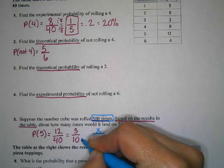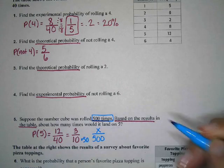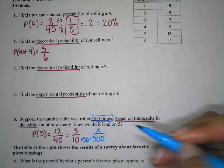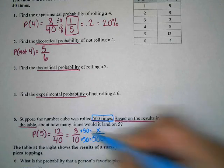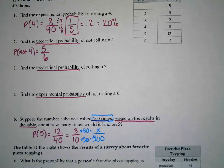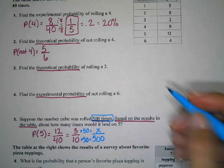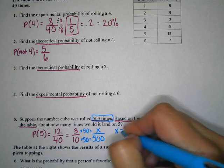If we multiply 10 times 50, it gives me 500. So if I multiply 3 times 50, it gives me my x value. Three times 50 is 150, so x equals 150.